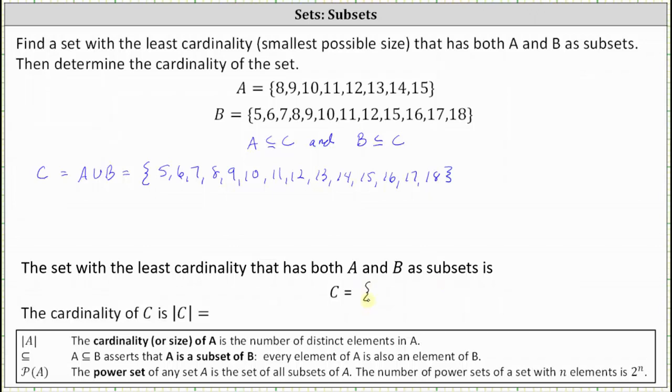which is the set containing the elements 5, 6, 7, 8, 9, 10, 11, 12, 13, 14, 15, 16, 17, 18.